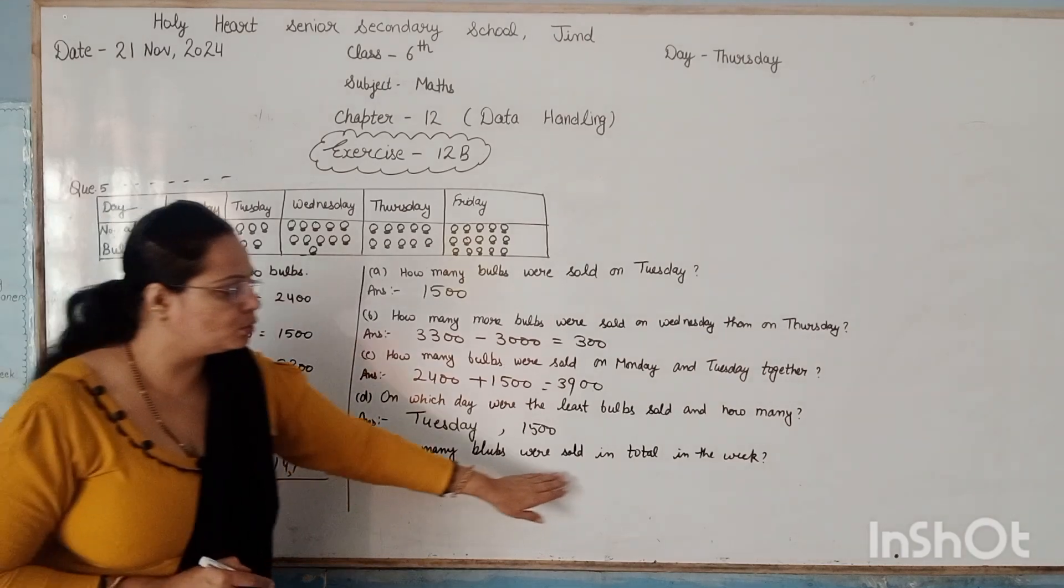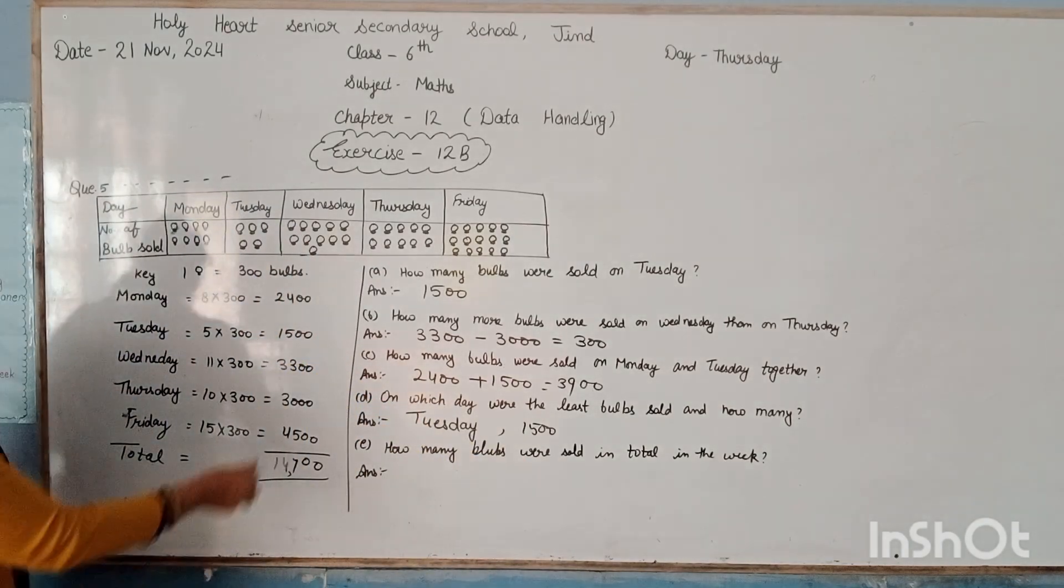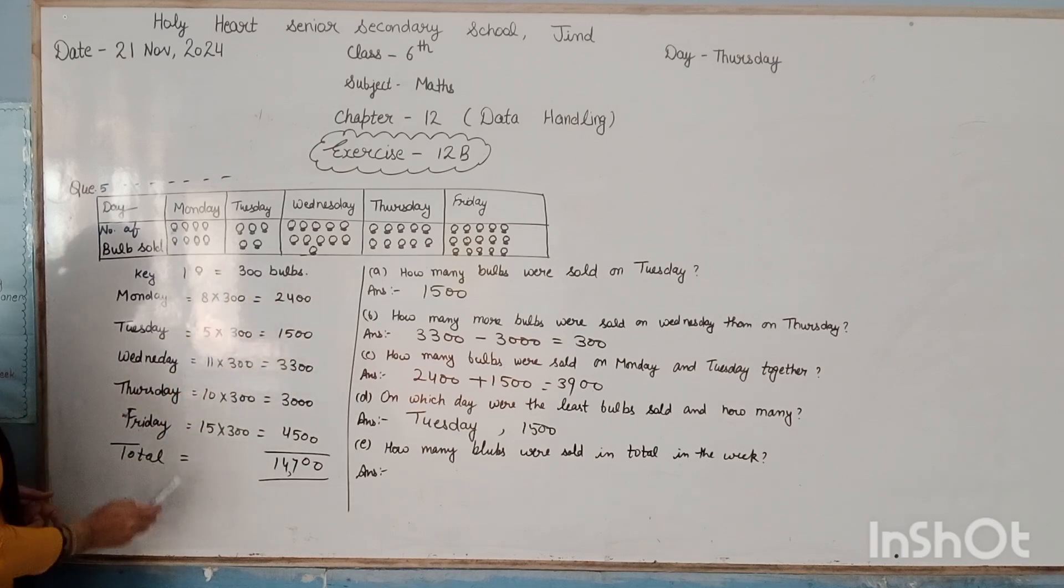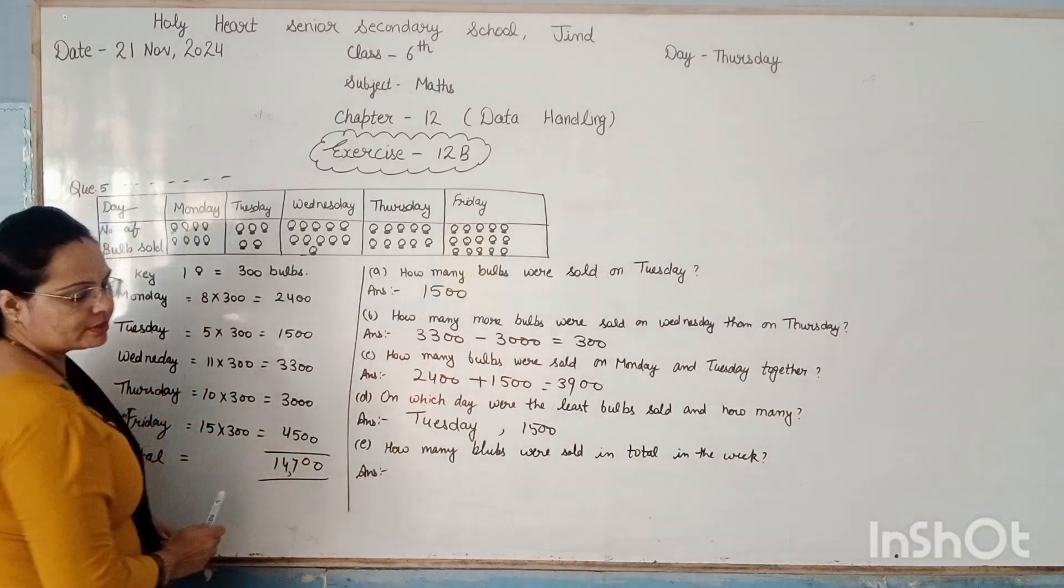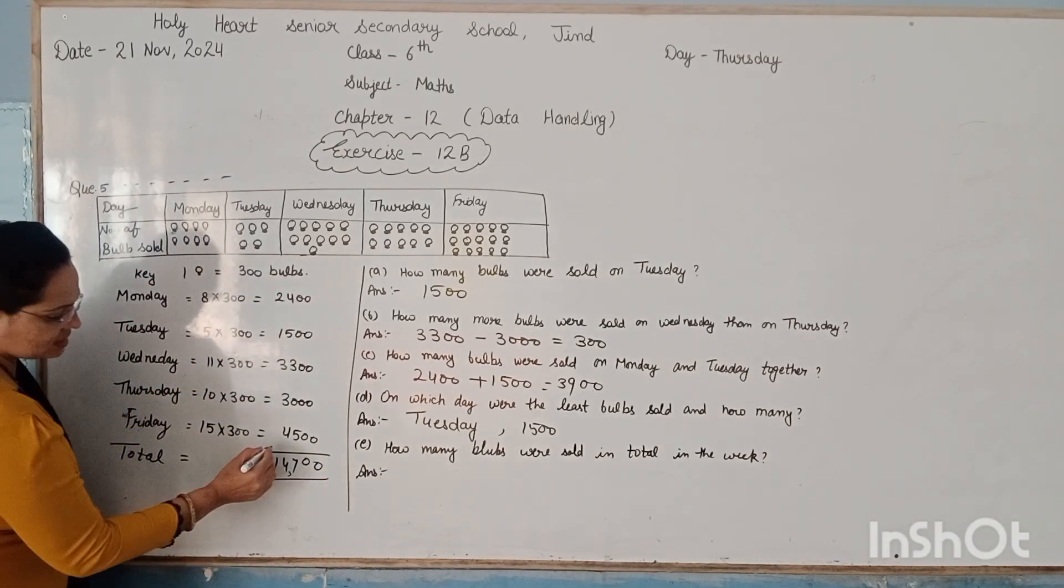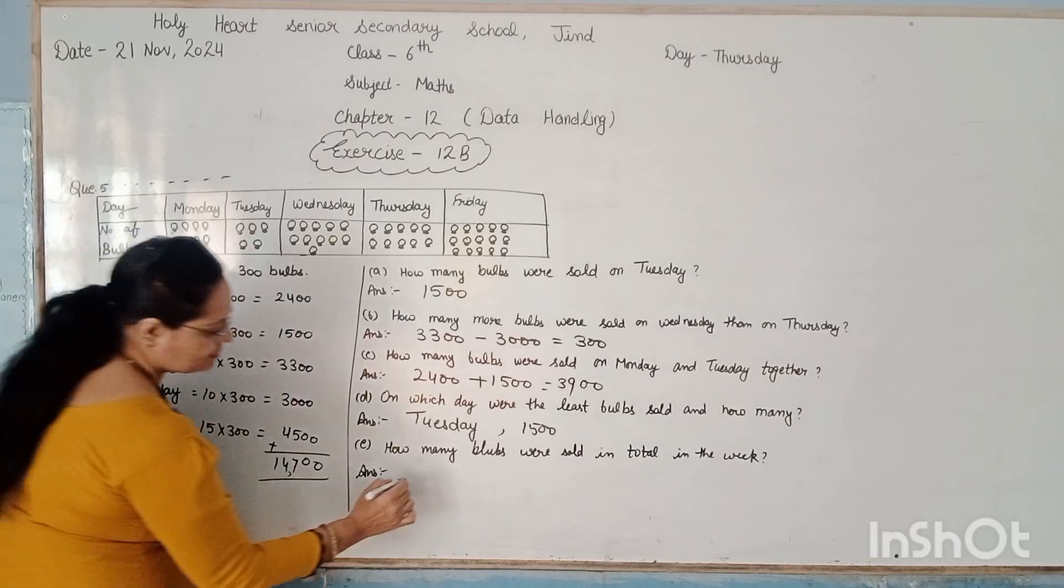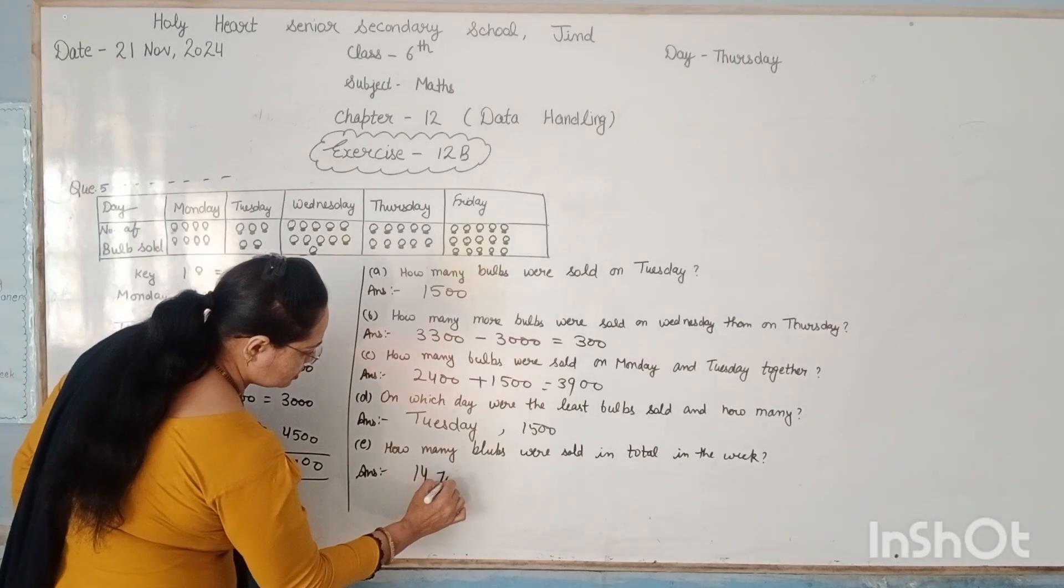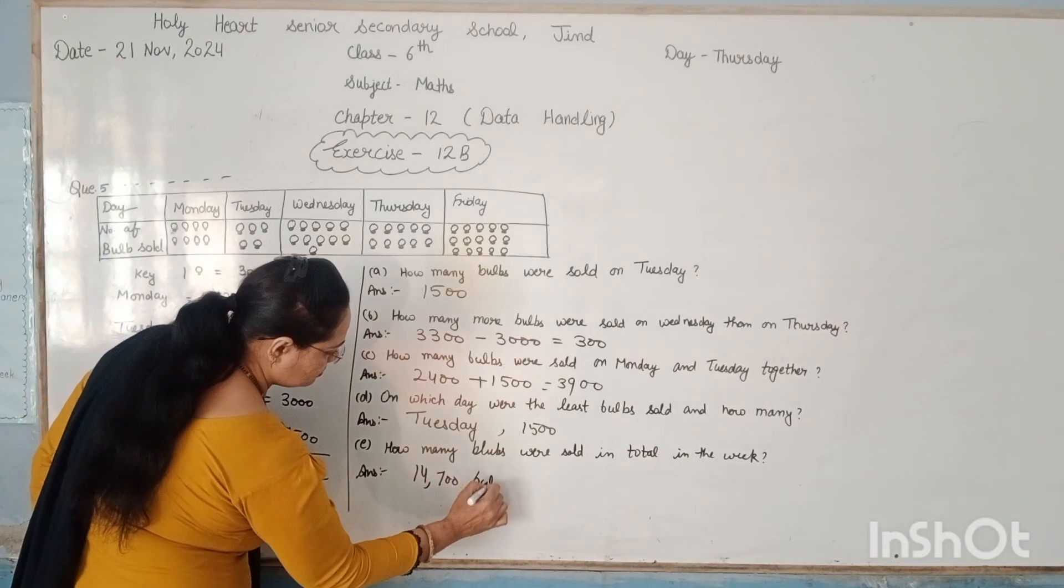How many bulbs were sold in total in the week? Means to say, this whole week, how many total number of bulbs were sold? So we have to add all these numbers, and we get the number 14,700 bulbs.